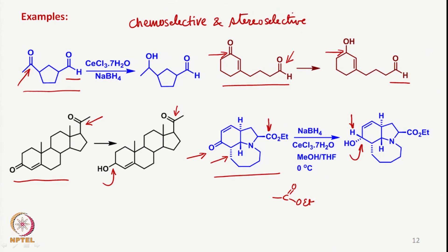Both chemoselectivity and stereoselectivity are very important aspects, and a number of examples have been reported in the literature where the utility of sodium borohydride and cerium chloride combination — known as Luche reduction — is used in a number of synthetic transformations.